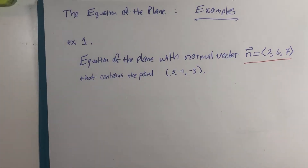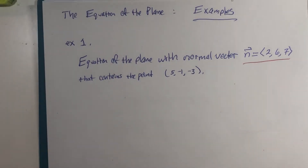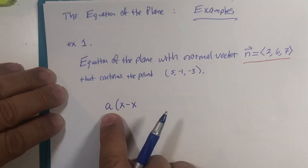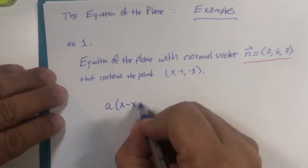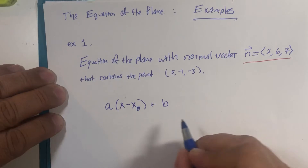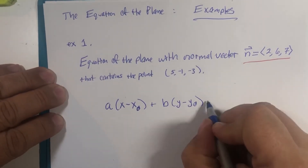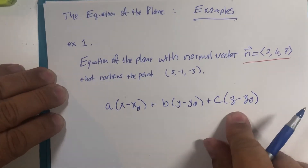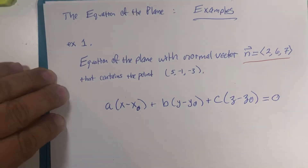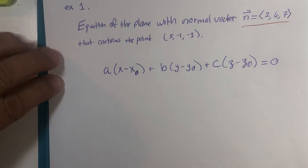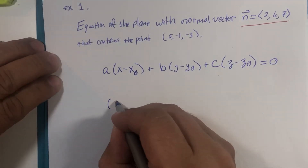The plane also contains the point (5, -1, -3). The model for our equation is: the X-component of the normal vector multiplied by (X minus X₀), plus the B-component multiplied by (Y minus Y₀), plus the Z-component multiplied by (Z minus Z₀). It equals zero because this comes from a dot product calculation representing two orthogonal vectors using the cosine of theta formula.